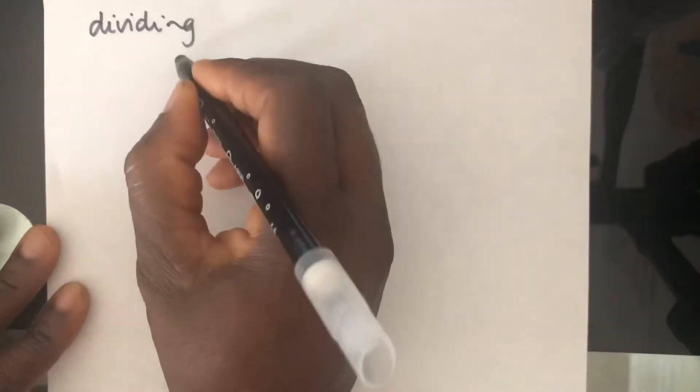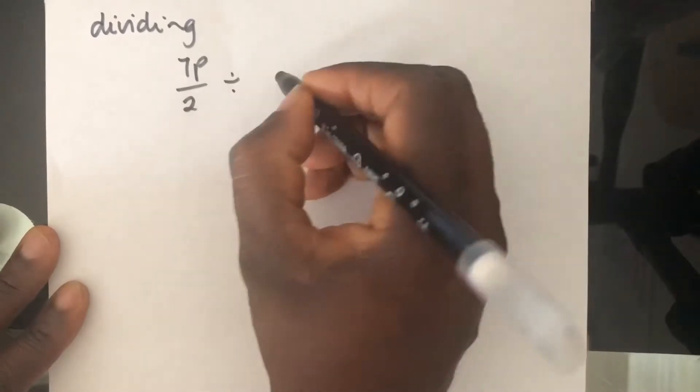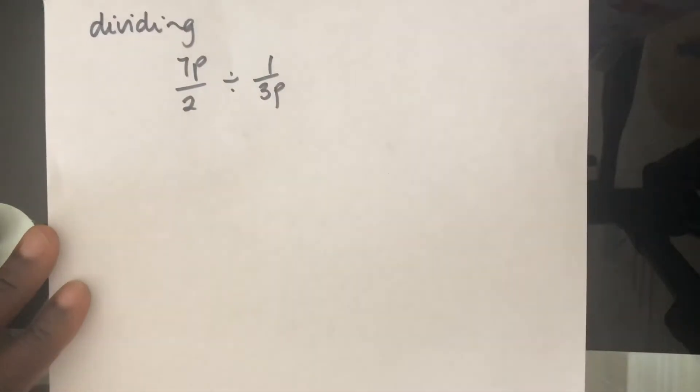Now, dividing algebraic fractions, let's have a look at an example, 7P over 2 divided by 1 over 3P.